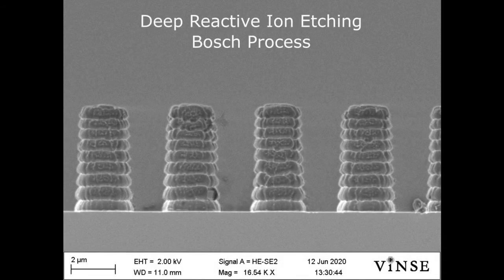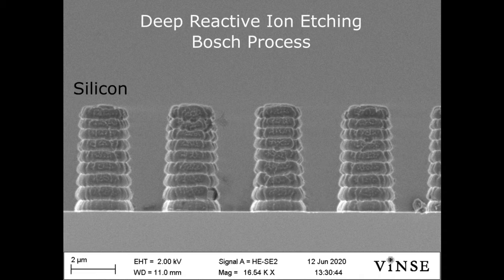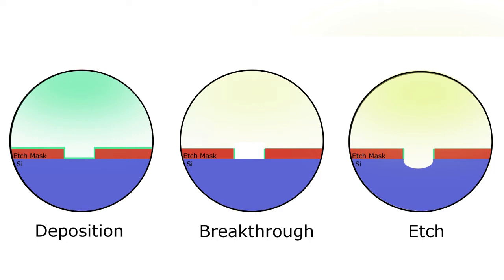When very high aspect ratio features are required, special techniques must be used, known as deep reactive ion etching. An example of this is the Bosch process. A Bosch process is used to etch high aspect ratio features into silicon. It consists of three steps: deposition, breakthrough, and etch.